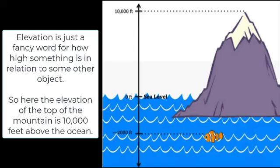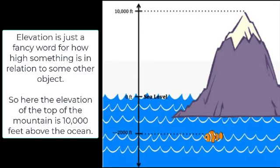The first thing we need to consider is just what is an elevation. It's kind of a fancy word for how high something is above something else, or in relationship to something else. Here we have a mountain coming out of the sea, and it has an elevation of zero feet at sea level and 10,000 feet at the top of the mountain. So we say that the elevation of the top of the mountain is at 10,000 feet. Let's use that as we go into topographic maps.